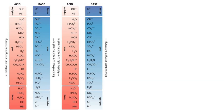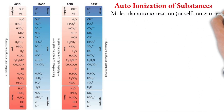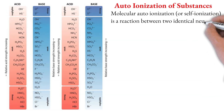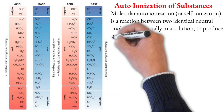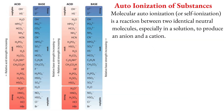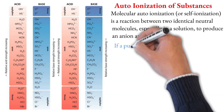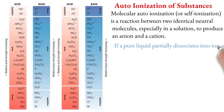Here we are going to talk about auto-ionization of substances. Auto-ionization of substance — molecular auto-ionization is a reaction between two identical neutral molecules, especially in a solution, to produce an anion and a cation. If a pure liquid partially dissociates into ions, it is said to be self-ionized. For example, water.